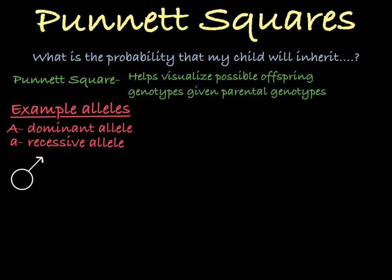I have a man who has the genotype big A, big A, and a woman who has the genotype big A, little a. Let's build them a Punnett square to predict their possible offspring genotypes.